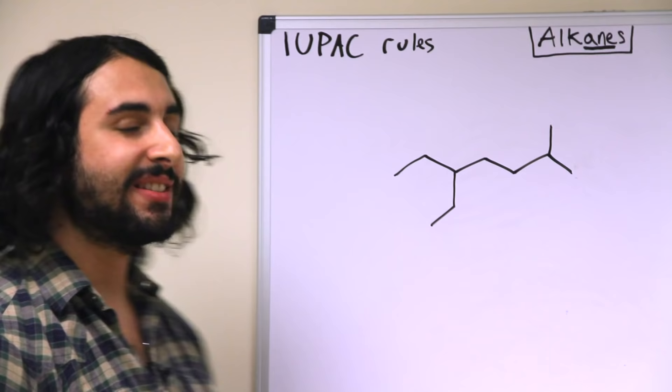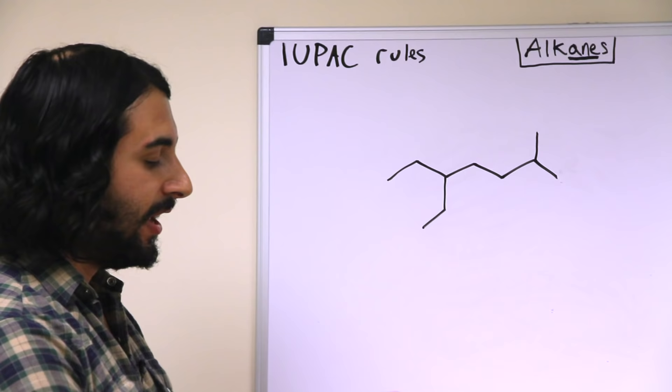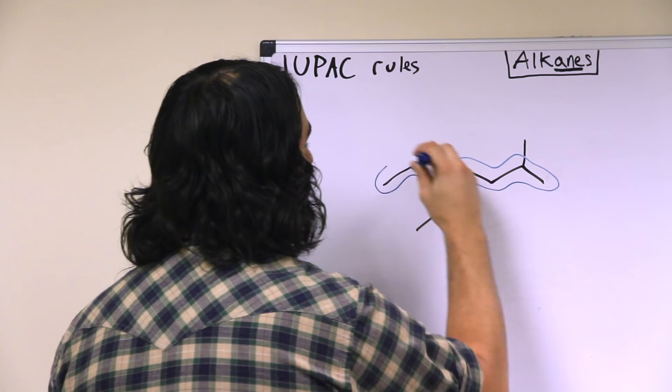Let's take a look at another example. Once again, the first thing we have to do is identify the longest carbon chain in the molecule. Here it's still pretty simple, it's just going to be this one in the horizontal plane.